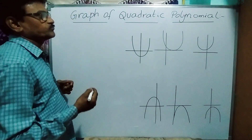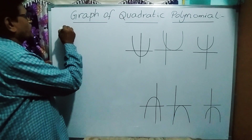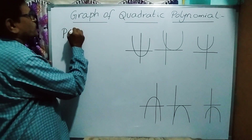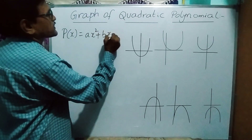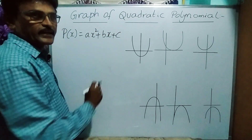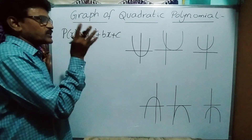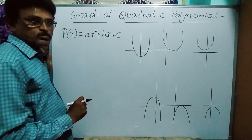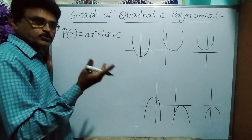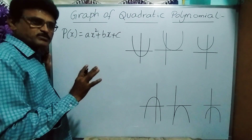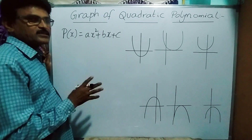Today our topic is quadratic polynomials. The general form of a quadratic polynomial is p(x) = ax² + bx + c. This is a second degree polynomial. Since it is second degree, it has at most two zeros — sometimes two zeros, sometimes one zero, and sometimes no zero at all. We will see why that happens.